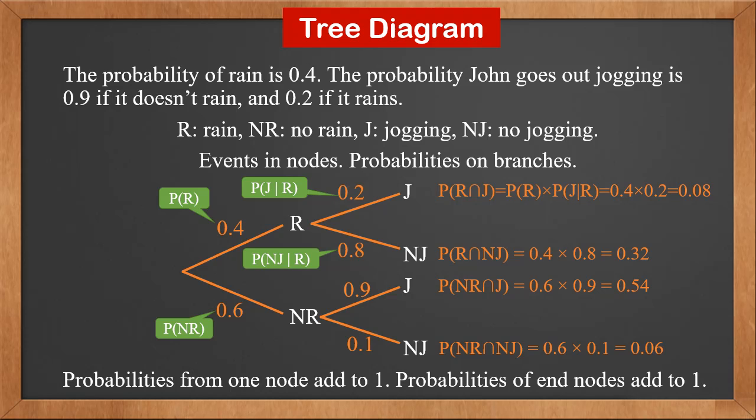Probabilities on branches coming from one node should all add to 1. 0.4 and 0.6 add to 1. 0.2 and 0.8 add to 1. 0.9 and 0.1 add to 1.